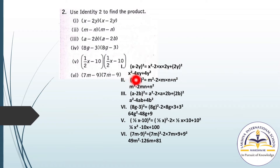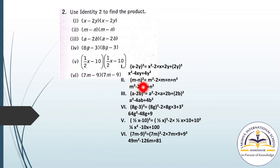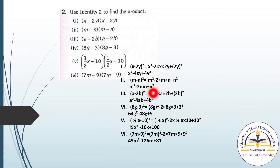Solving (X - 2Y)²: X square minus 4XY plus (2Y) square, which gives X square minus 4XY plus 4Y square. For (M - N) and (M - N), we write (M - N) whole square, giving M square minus 2MN plus N square.